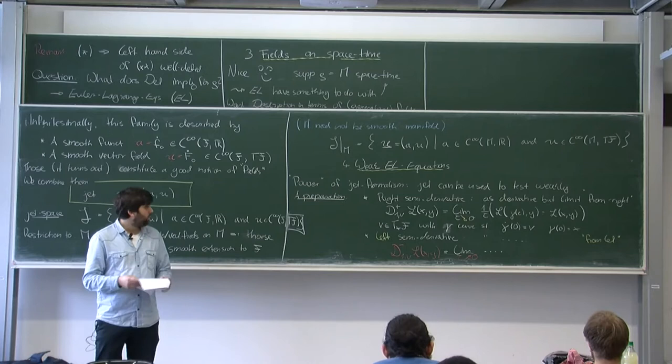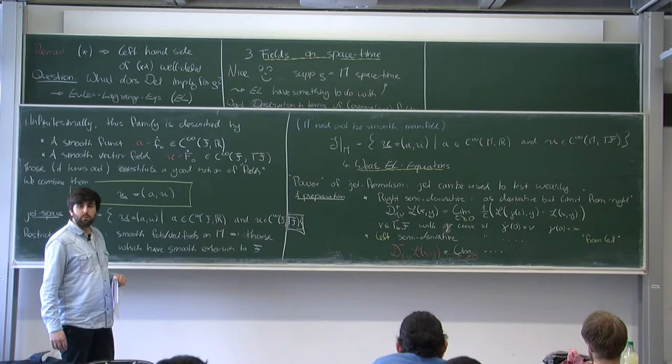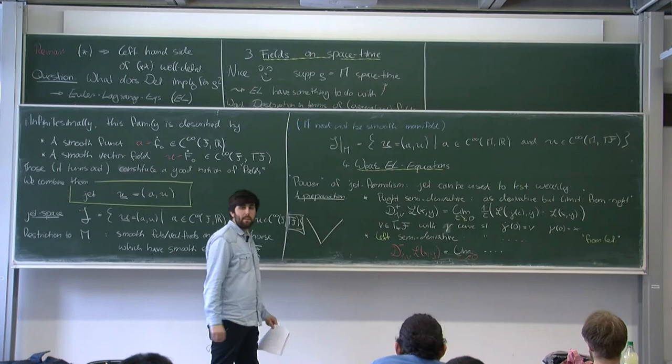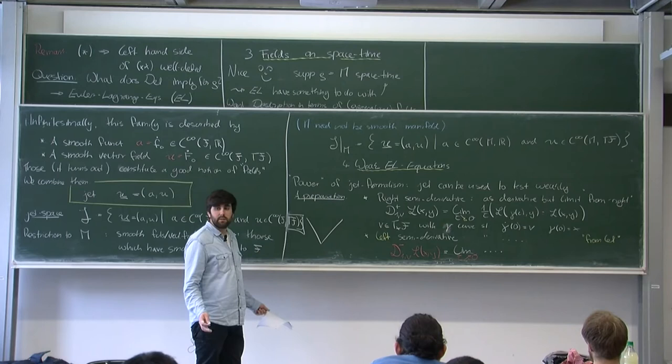For completeness, assumption five states that the left and right semi-derivatives of L exist in ℝ ∪ {∞}. Assumption six states that these semi-derivatives can be exchanged with ρ-integration. Those are additional assumptions we need in this general setting.